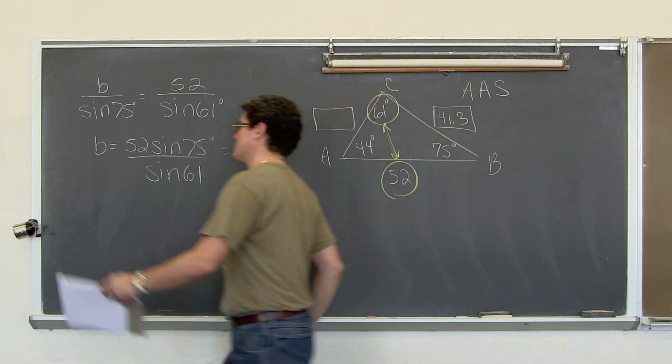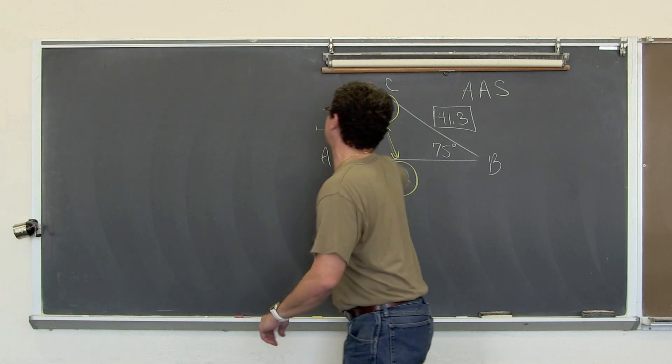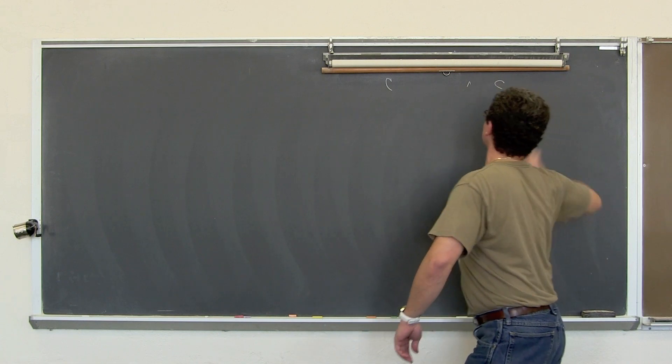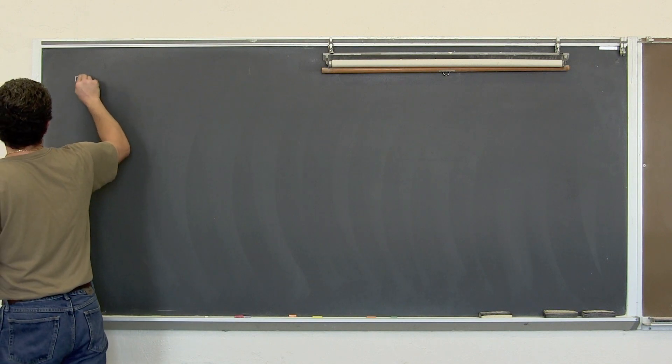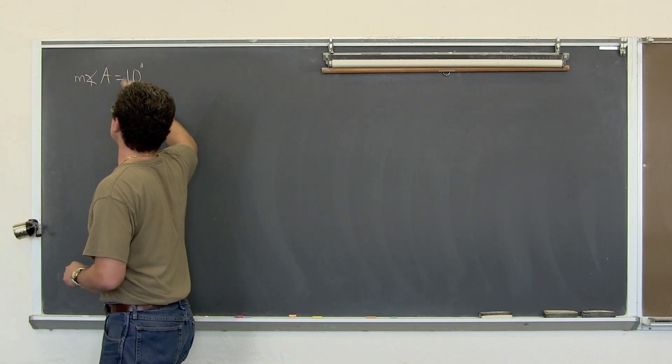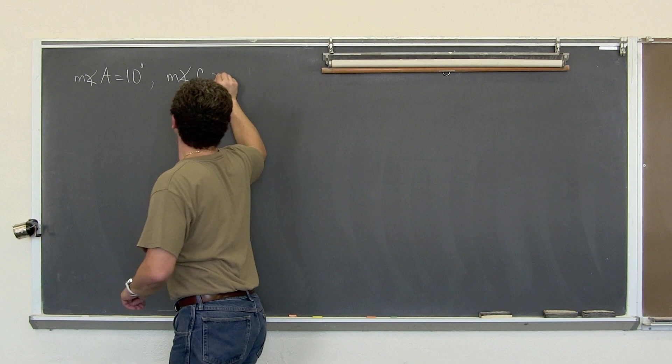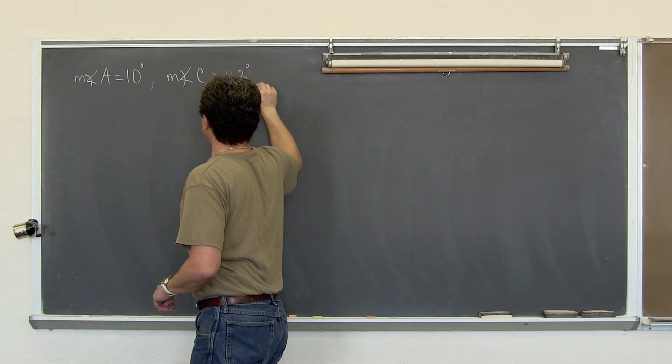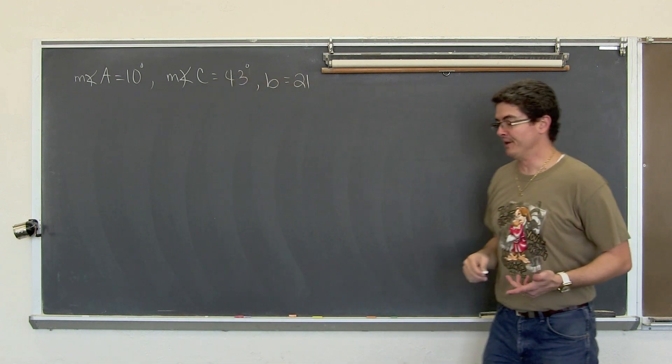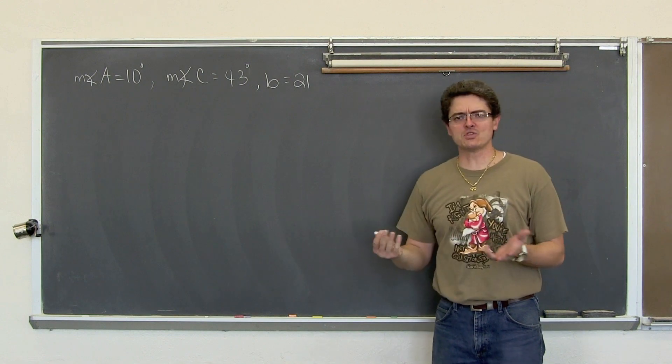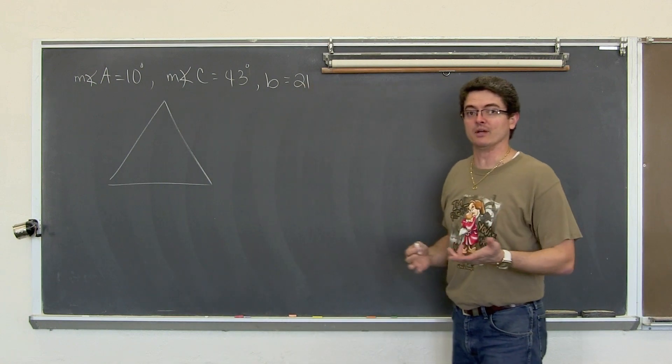One more example. Actually two more. We are going to do one more example with the Law of Sine, and then I want to explain to you about finding the areas of an oblique triangle using the sine function. So we have this information: the measure of angle A is 10 degrees, the measure of angle C is 43 degrees, and side b is equal to 21 units.